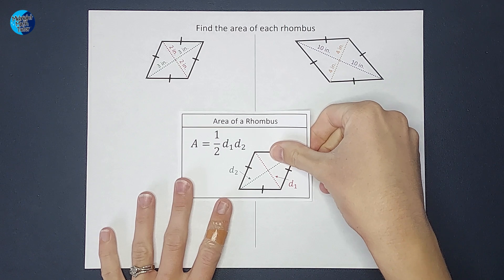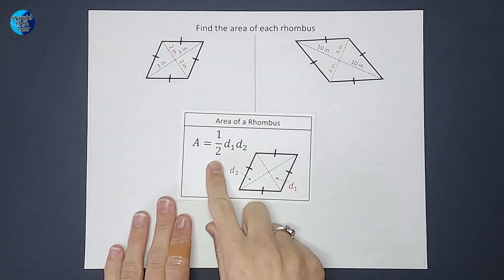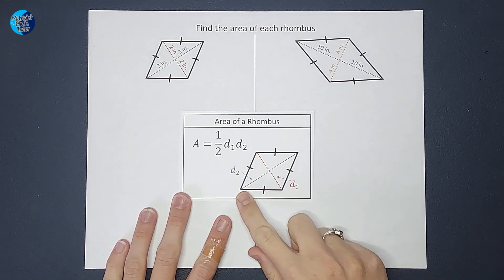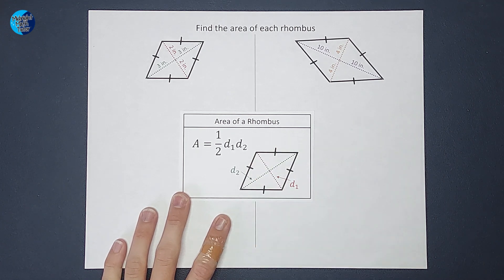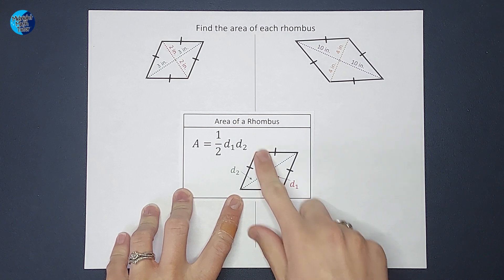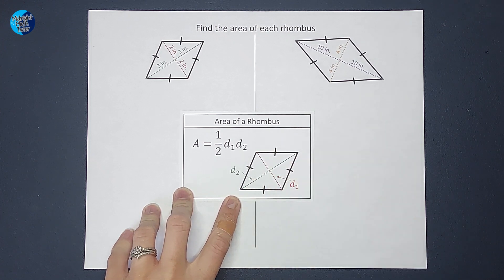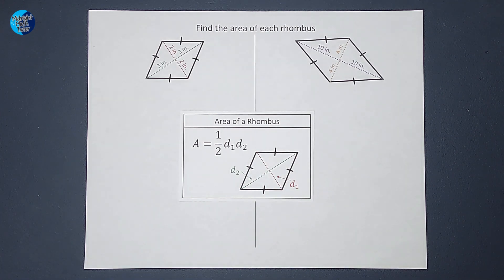So the area of a rhombus can also be known as half times diameter one, not diameter, diagonal. Oh my gosh, this isn't a circle. Half times diagonal one times diagonal two. Now, if you're like, that seems kind of random, why does that work? That's a lovely question. I'll link a video for you in the corner where I explain it.